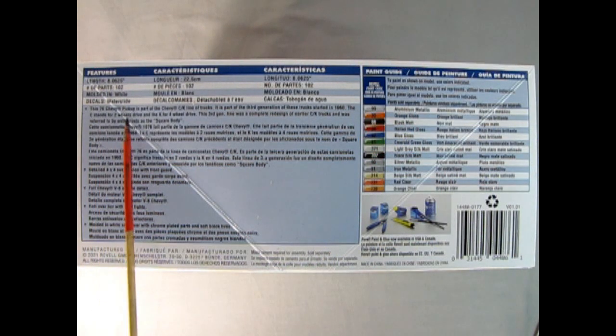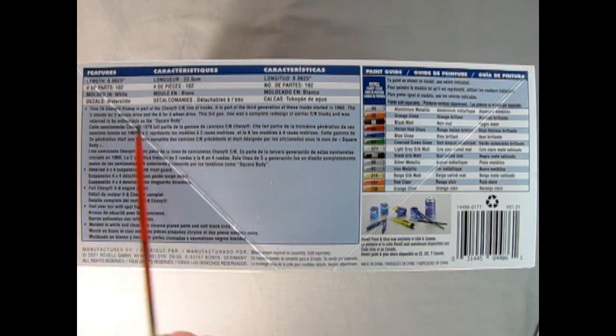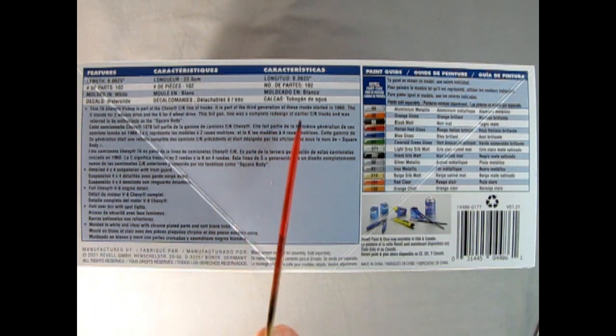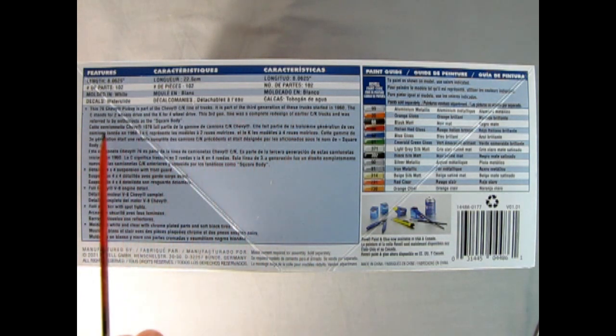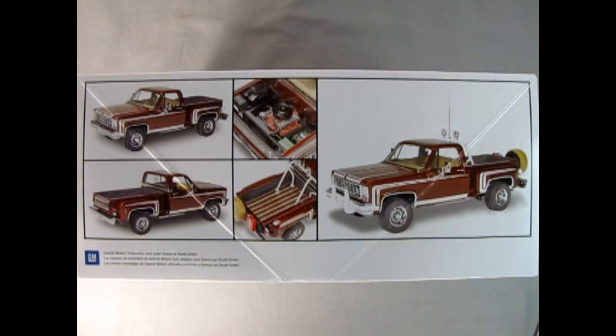This side of the box shows details of the model kit including the length of 8 inches, number of parts is 102, molded in white with water slide decals. You also get a write-up of the kit, which I'll include in the comment section, and this paint chart with actual colors.